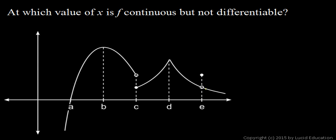At point e, it's not continuous. This is a discontinuity. Even though the left and right limits are the same, the limit is not equal to the value of the function at that point.